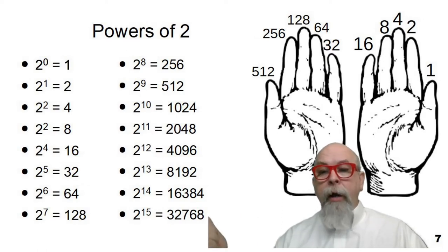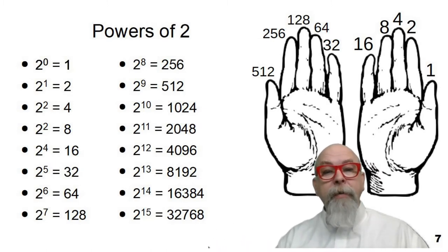Powers of 2, let's just go through them. 1, 2⁰. 2, 2¹. 4, 2². 8, 2³. 16, 2⁴, just keep doubling, 32, 64, 128, 256, 512, 1024.